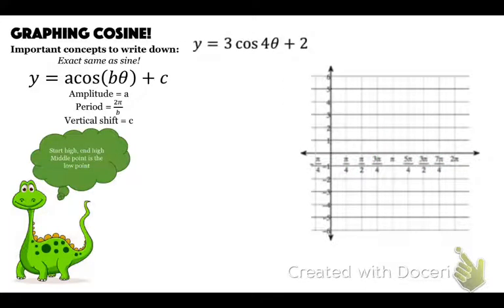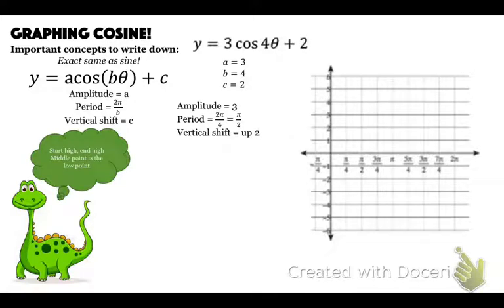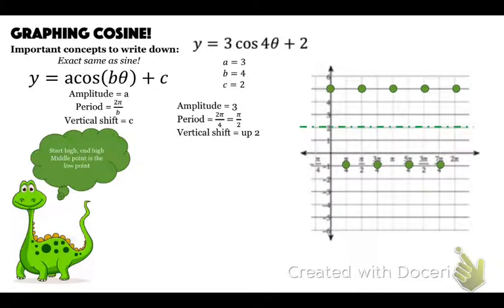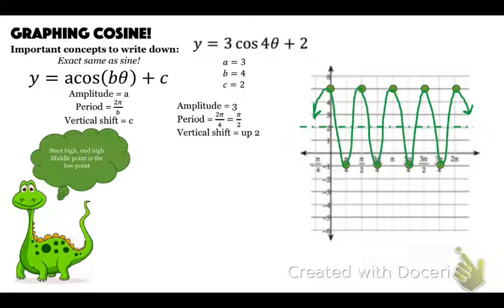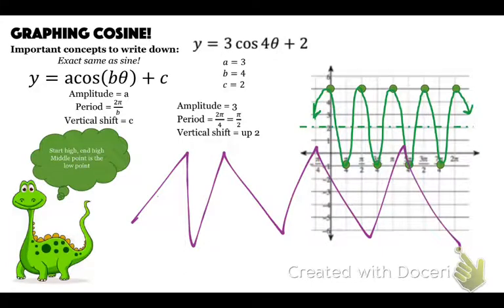That just repeats. Next: 3 cosine of 4 theta plus 2. A is 3, b is 4, c is 2. Amplitude is 3, period is two pi over 4 which reduces to pi over 2, and the vertical shift moves it up 2. Start high — go from the vertical shift up 3 for the starting point. End high at pi halves. The middle low point is down 3 from the shift. This repeats — and remember, these are smooth curves, not sharp ones.